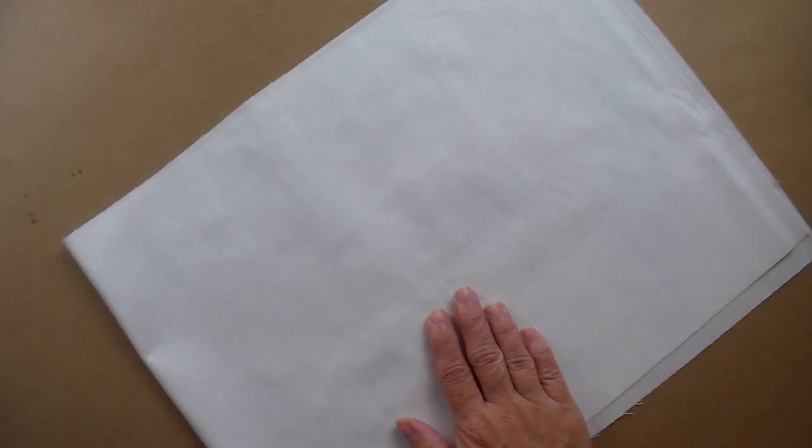Foundation fabric is the material that the punch needle design is punched into. Weaver's cloth is a tightly woven cotton and polyester blend fabric. While you can punch into other fibers, weaver's cloth is the best foundation fabric for beginners.